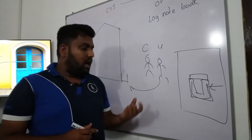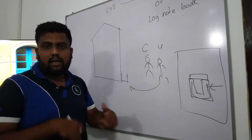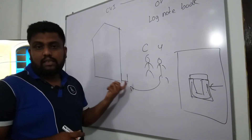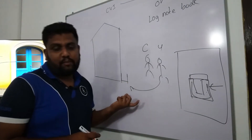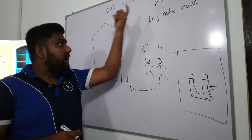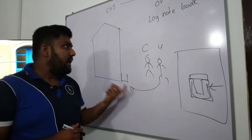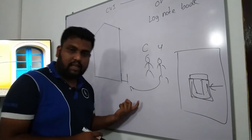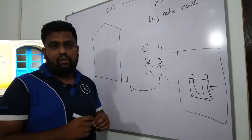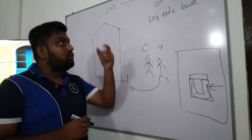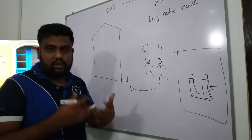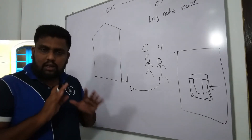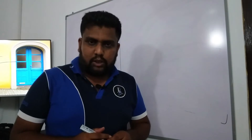Why do we need this proof document? Think about it — after the consultant gives the verbal instruction and you construct accordingly, that consultant may change. If the consultant is no longer there, how do you prove what was instructed and claim for the work done? That's why you must raise a CVI form or log note for any verbal instruction on site, and use those CVI forms as supporting documents for extra work and variations in the future.